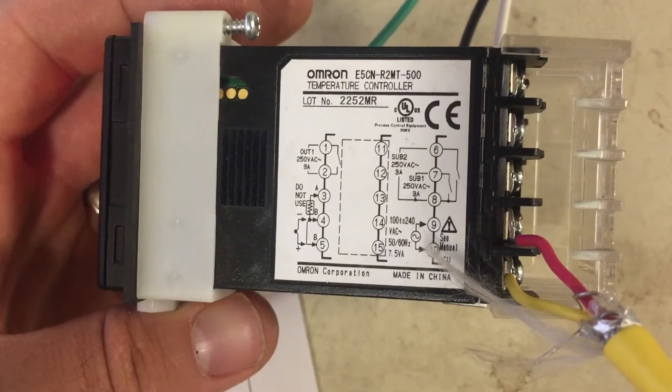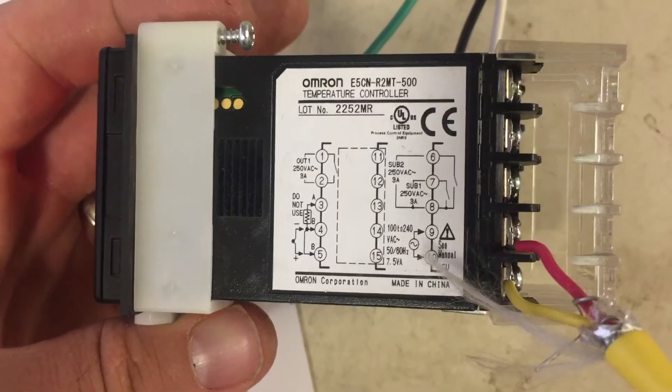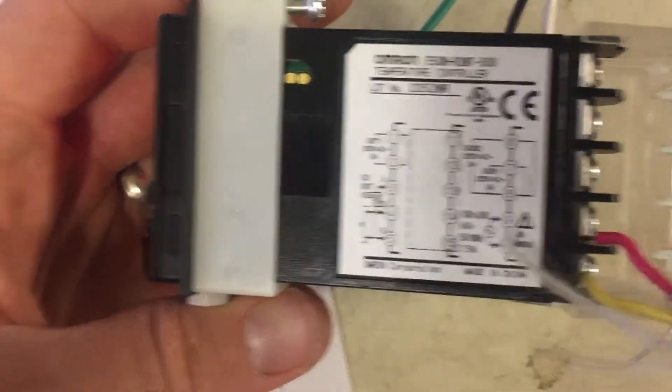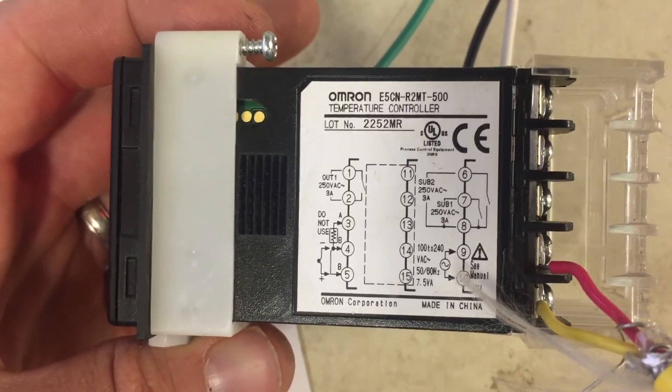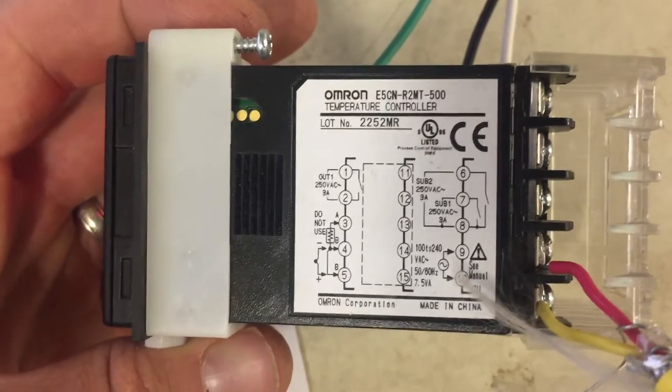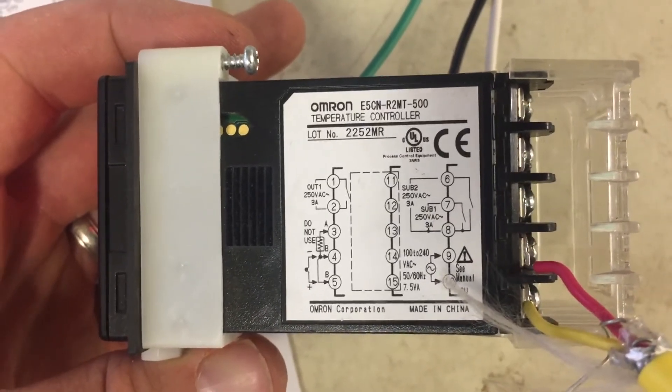And the last two, or there's four more actually, this number 7 and 8, which is typically used as the alarm output in the event that it goes past our alarm set point and number 9 and 10, which is the power input, which I've got currently connected.